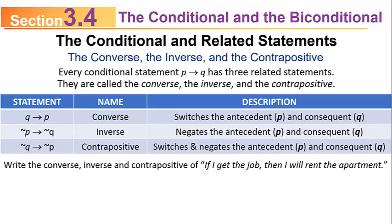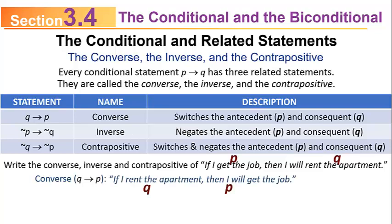Here's an example. Write the converse, inverse, and contrapositive of: if I get the job, then I will rent the apartment. The converse switches P and Q. Since P is 'I get the job' and Q is 'I will rent the apartment,' the converse puts Q in place of P: if I rent the apartment, then I will get the job.